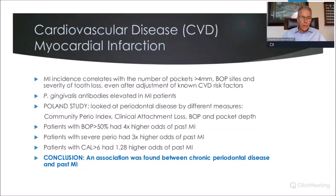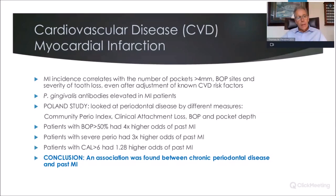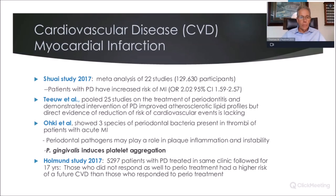Doesn't that make sense? Inflammation leads to bleeding on probing, which had the highest odds of a past heart attack. Then severe periodontal disease — which likely still has an active inflammatory process — the next highest odds. The study's conclusions: an association was found between chronic periodontal disease and a past history of a heart attack. Multiple other studies have shown correlations as well. Shai's 2017 meta-analysis of 22 studies with nearly 130,000 patients found patients with periodontal disease had an increased risk of having a heart attack — nearly twice as likely, with a 59% to 2.5 times more likely range.